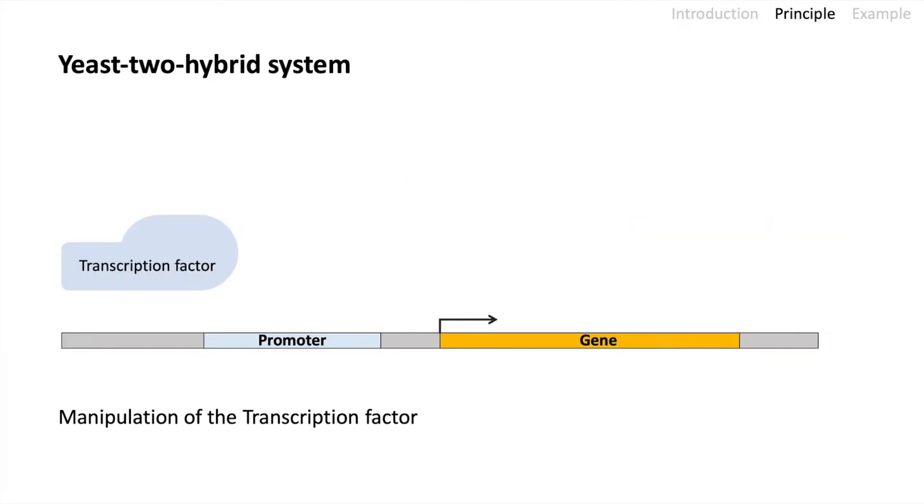For the yeast-two-hybrid system we use this and manipulate the transcription factor. We can split it into two domains. We have the DNA binding domain which binds to the DNA and we have an activator domain. This domain will recruit RNA polymerase later to activate transcription. Now we fuse both proteins of interest, protein X and protein Y, to each of the domains. So protein X we fuse to the DNA binding domain and protein Y we fuse to the activator domain.